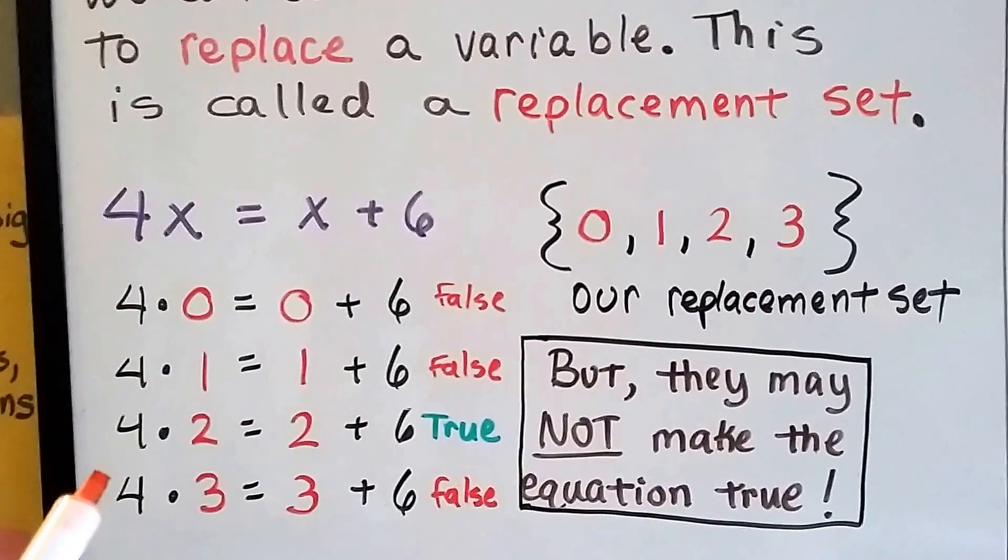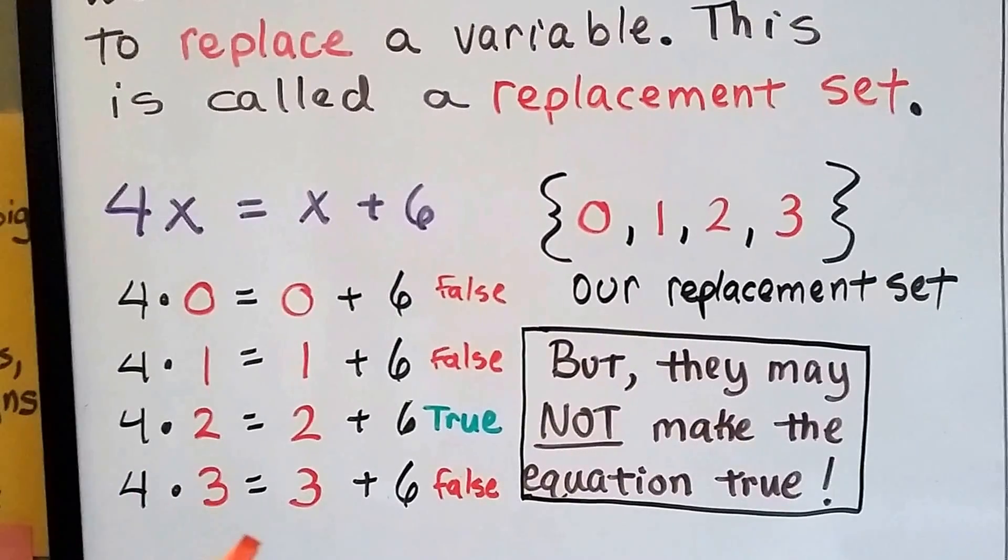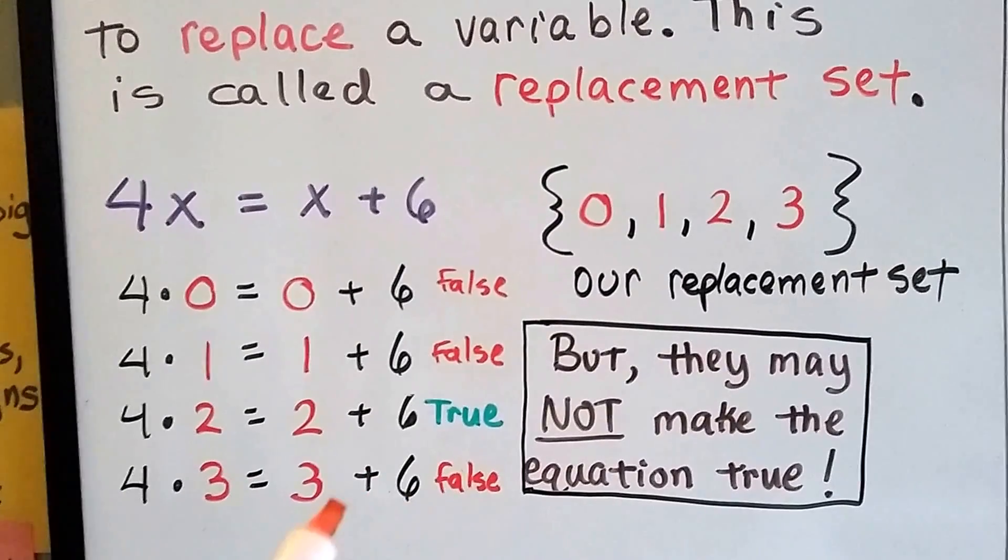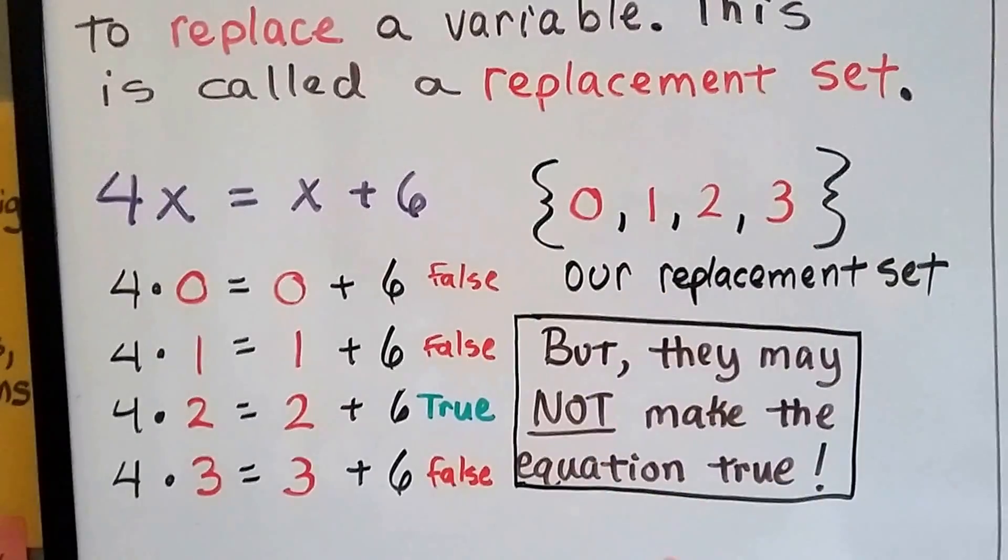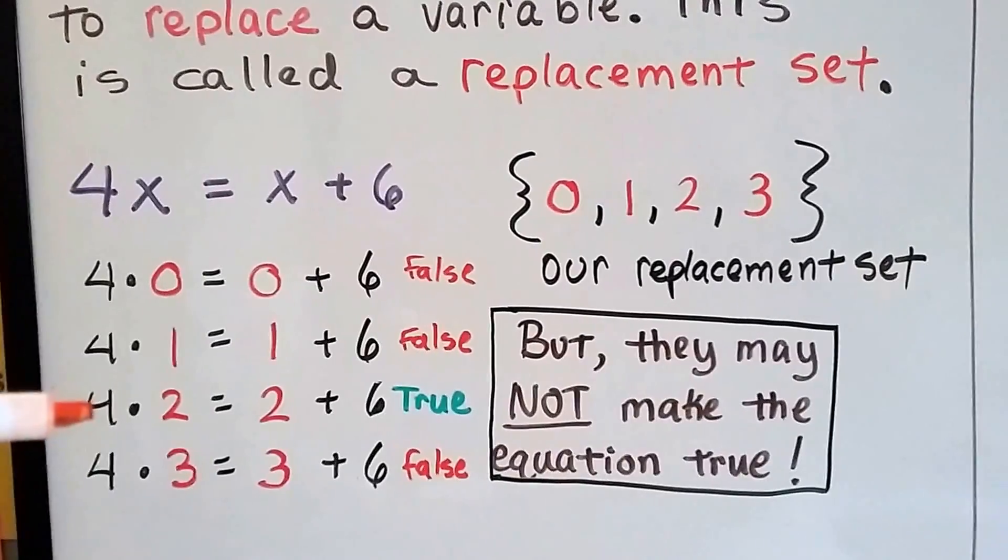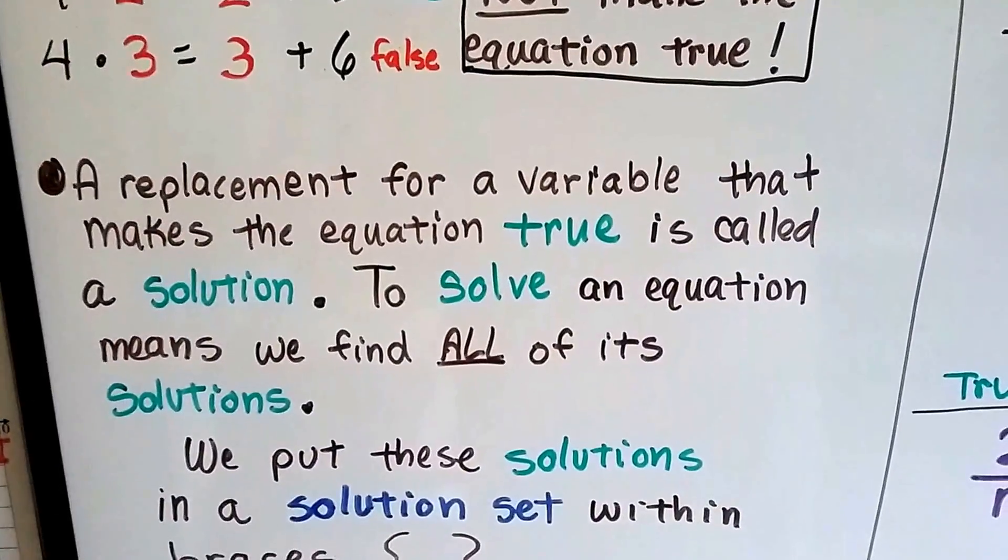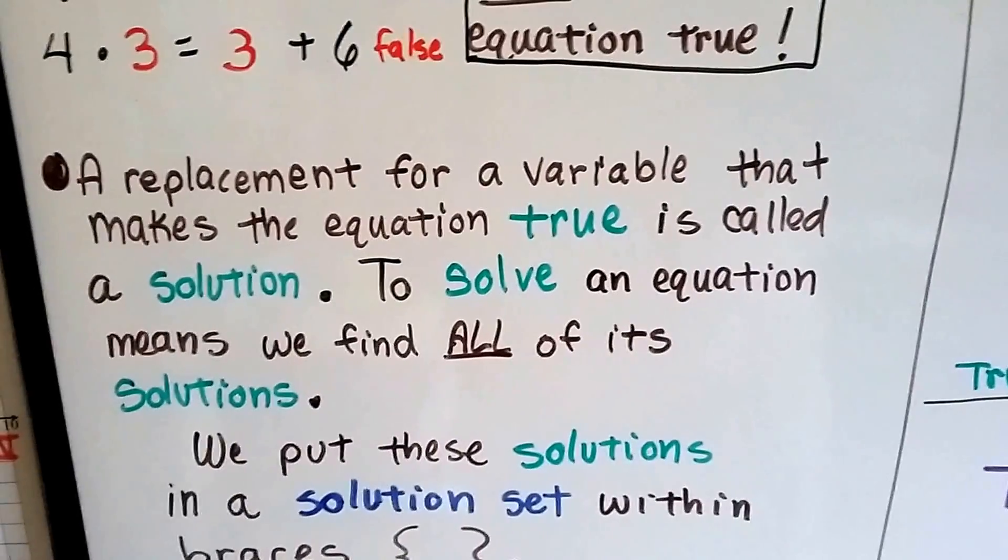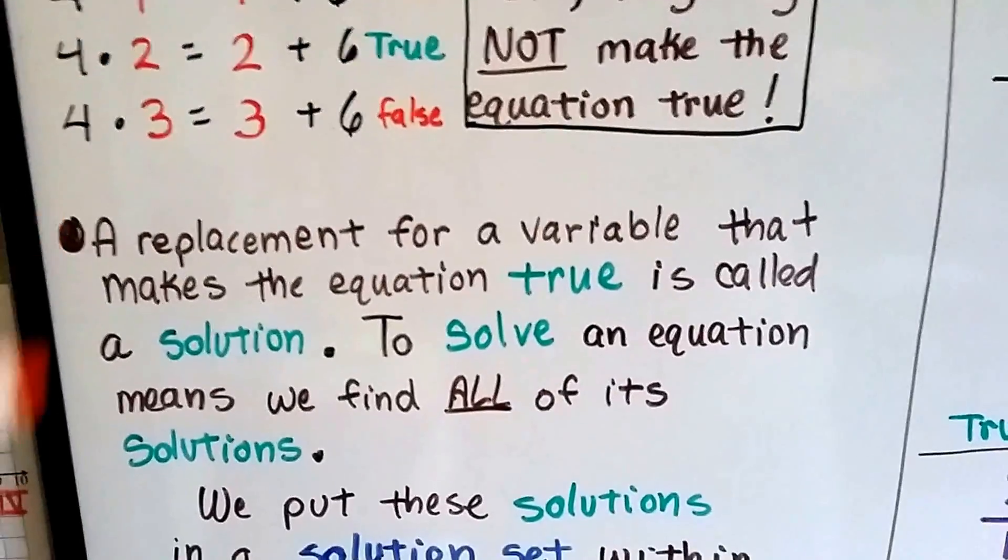How about 3? Let's try plugging the 3 into this equation. 4 times 3 is 12 equals 3 plus 6 is 9? No, that's false. So this is our replacement set, but they may not all make the equation true. The only one that made it true was the number 2. A replacement set for a variable that makes the equation true is called a solution. So 2 is true, so that's our solution.